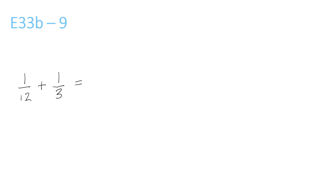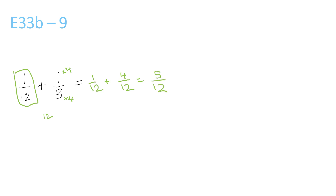12 and 3 both go into 12. The 1 over 12 stays the same, so we can just write it over here. But 3 times 4 is 12, so we times 1 by 4 and get 4 over 12. Now we add the top numbers: 1 plus 4 is 5 over 12.